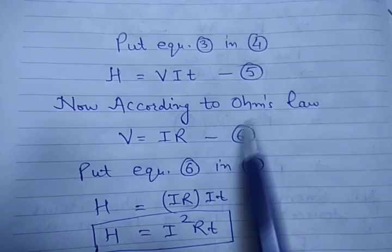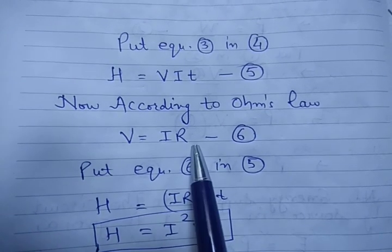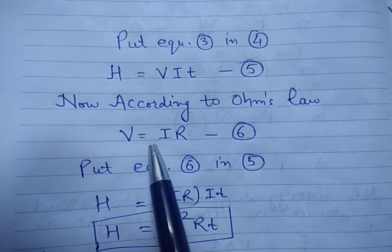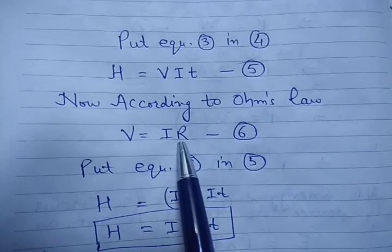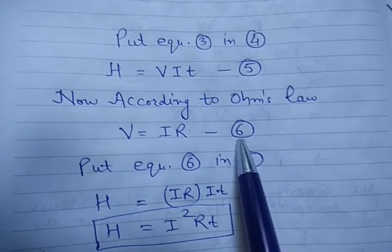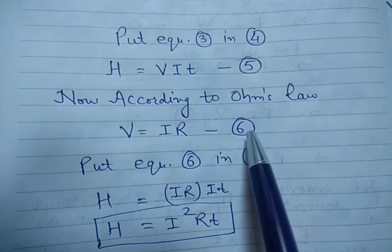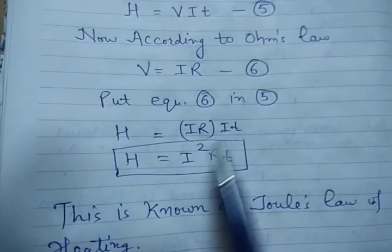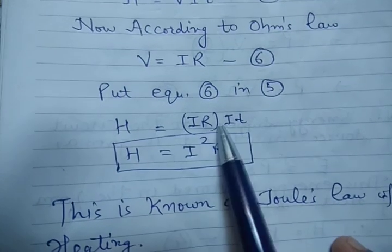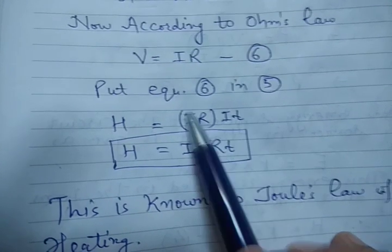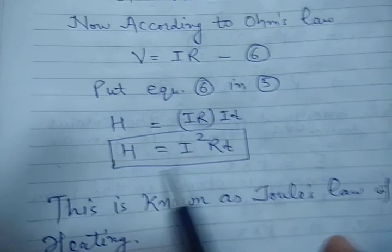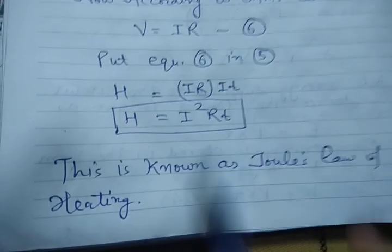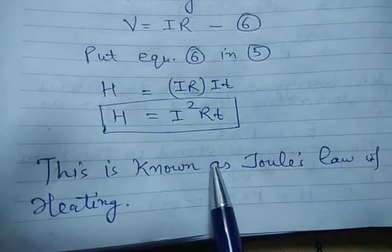Now according to Ohm's law, we know that V equals IR, that is potential difference equals current into resistance. This is equation number 6. Now put equation 6 into equation 5. We will get H equals IR into IT. I into I, that is I square. So H equals I square RT. This is known as Joule's law of heating.